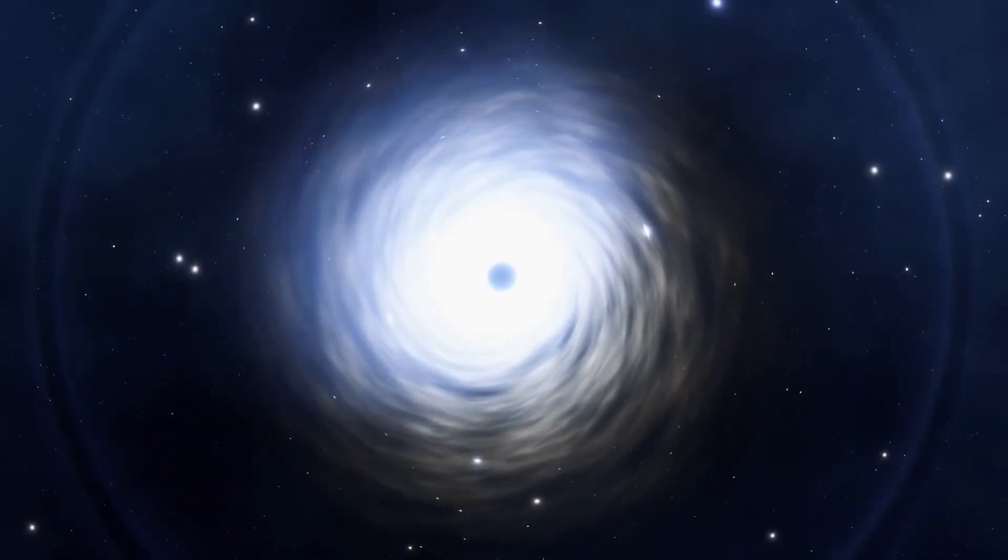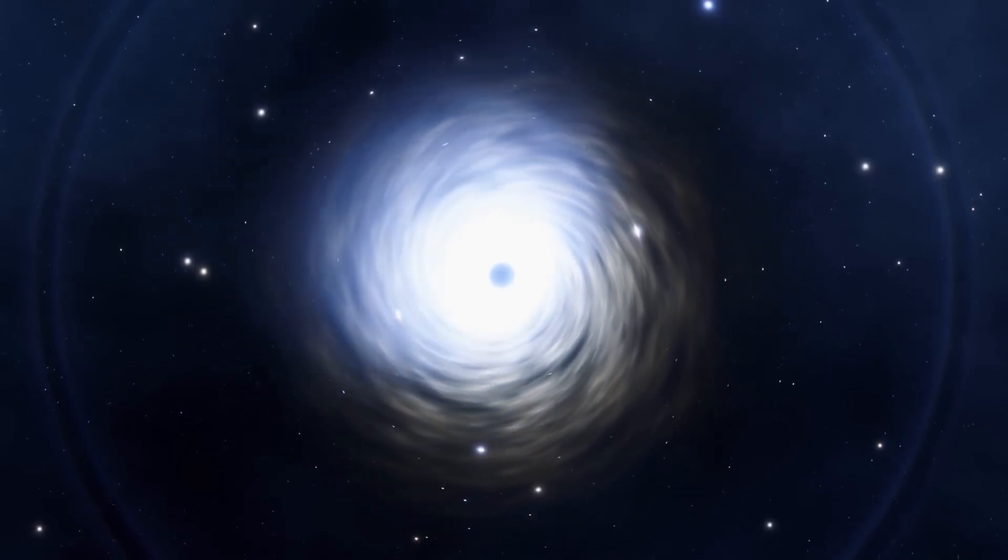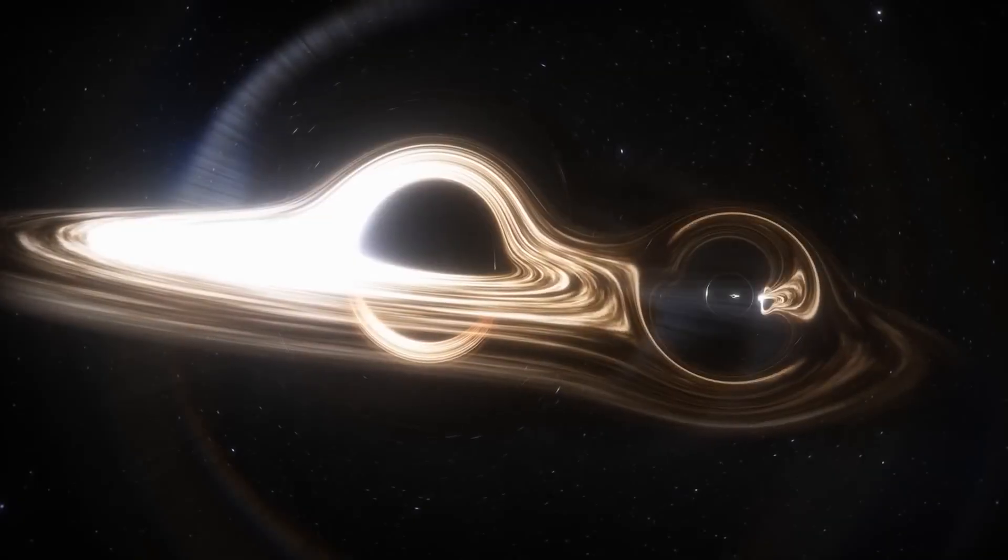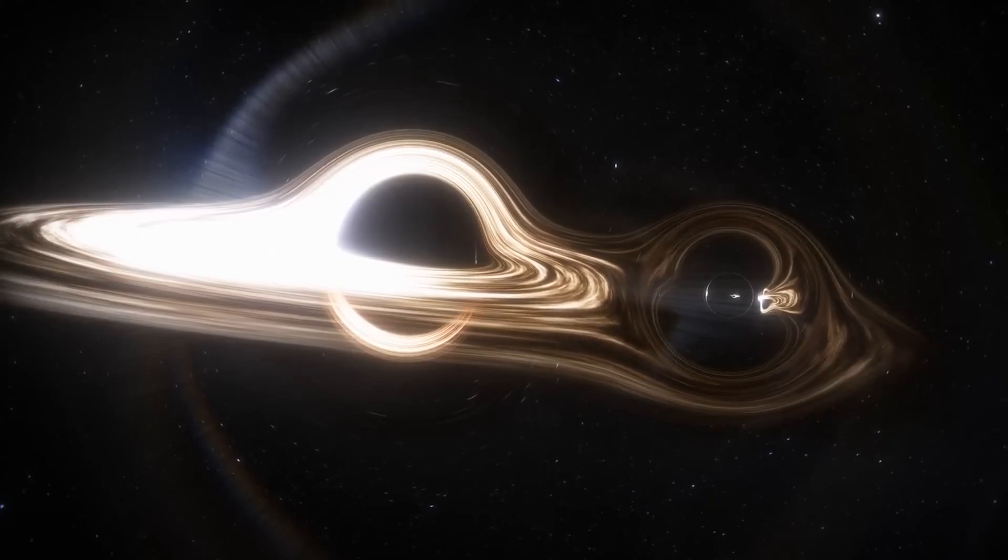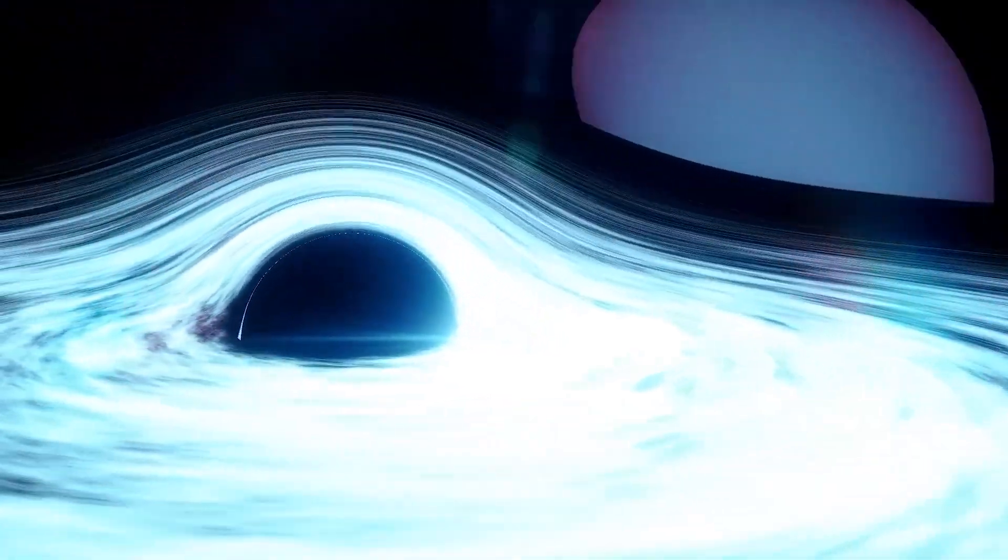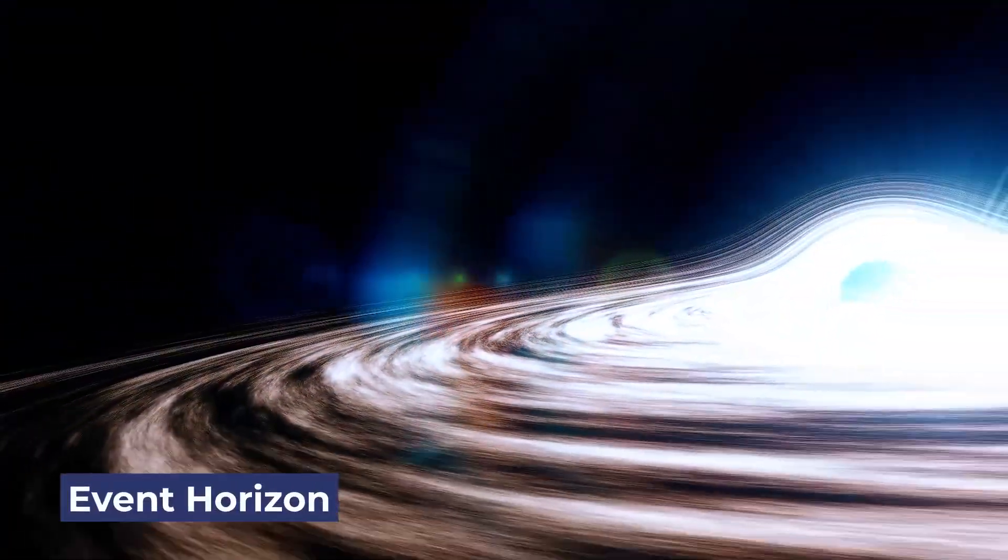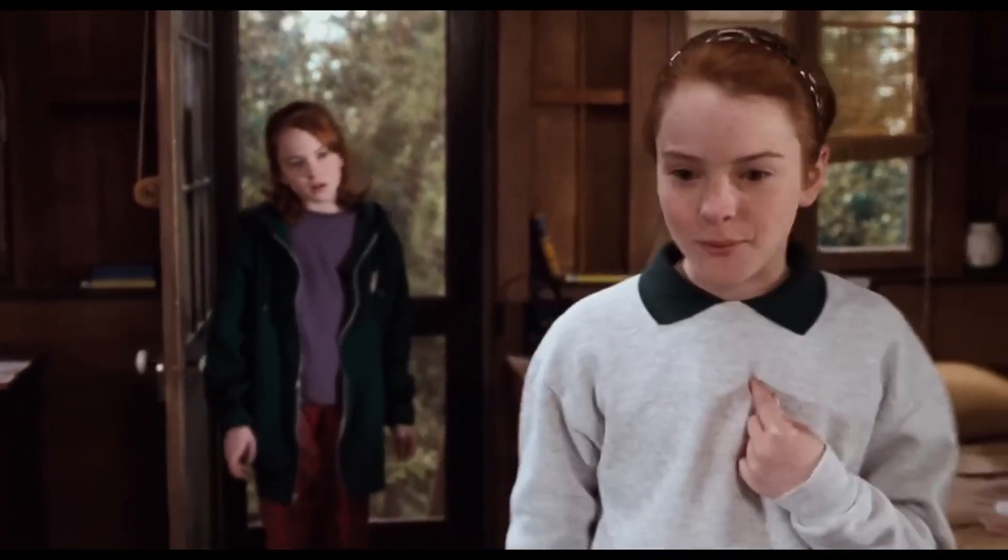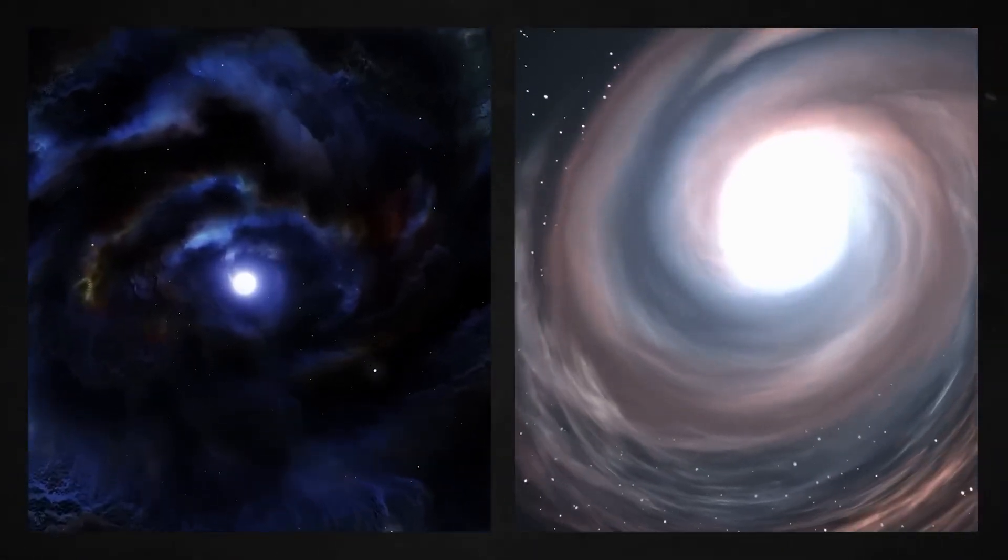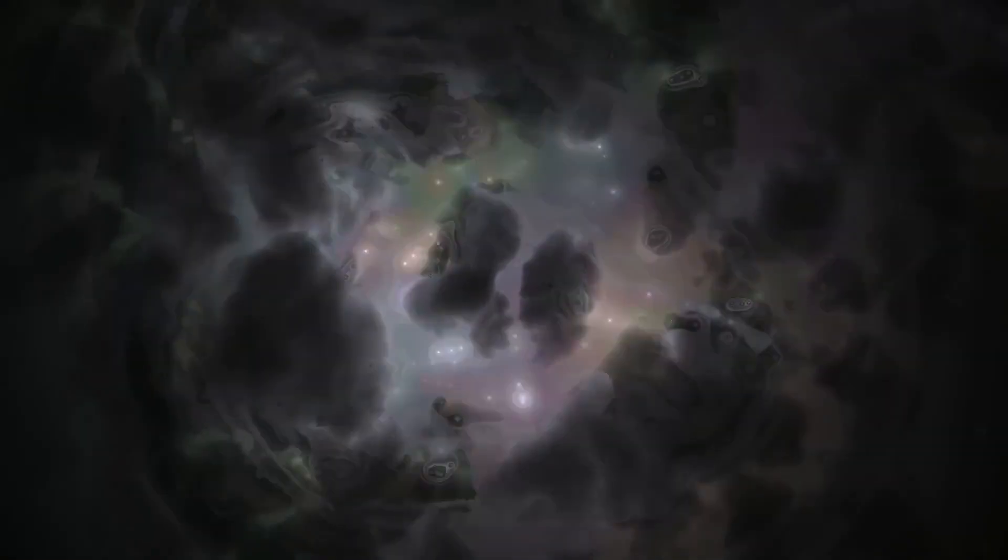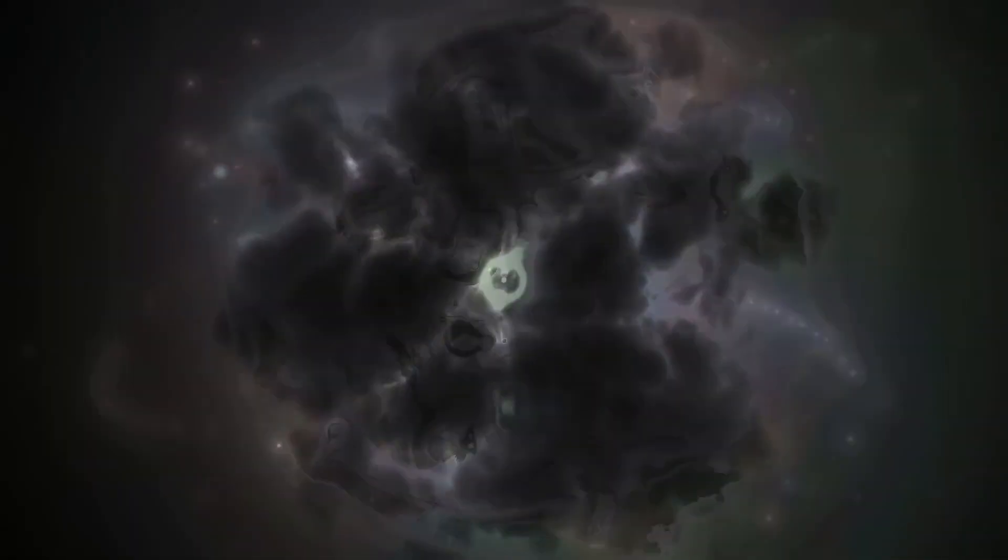White holes are hypothetical cosmic objects with completely different behavior than black holes. While black holes pull matter and light into an incredibly dense center called a singularity, white holes do the opposite. They push out matter and light, preventing anything from entering beyond a boundary known as the event horizon. Imagine having a twin sibling who is your complete opposite. That's kind of how black holes and white holes relate to each other. But before we dive much further into the mind-bending concept of white holes, let's explore black holes a bit more.